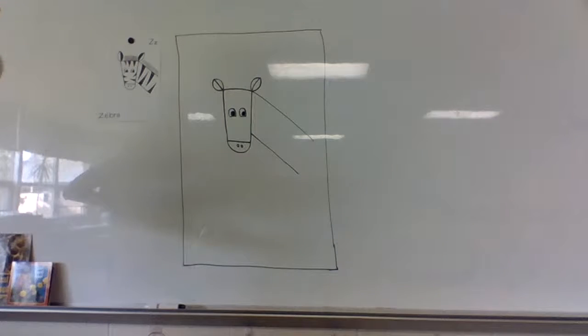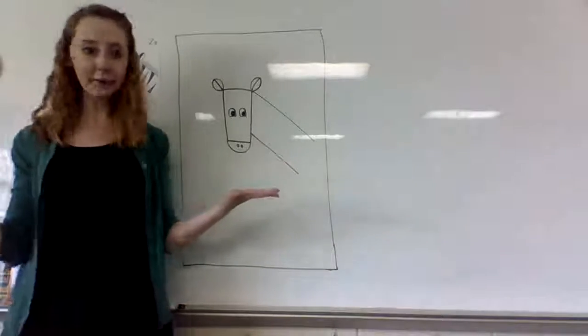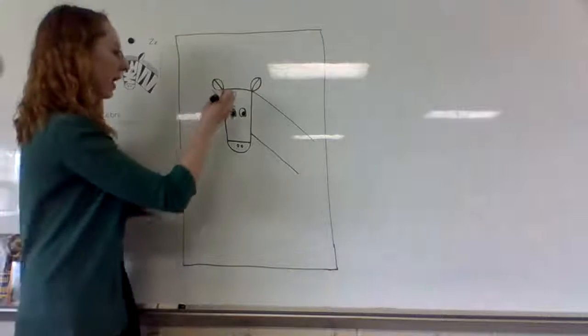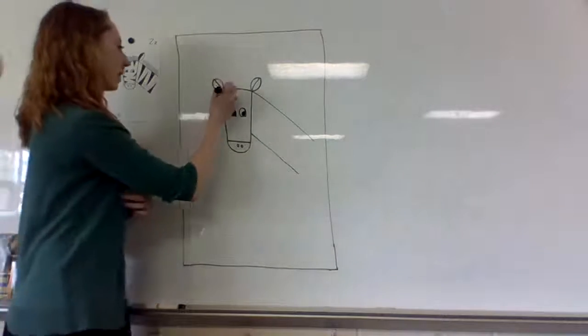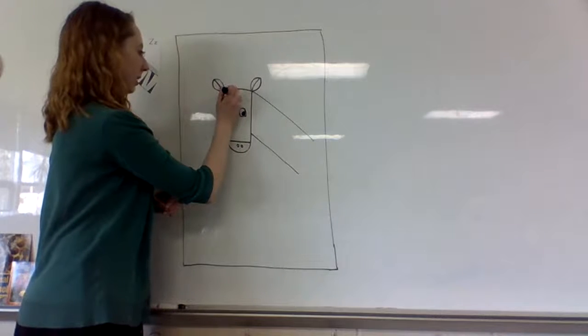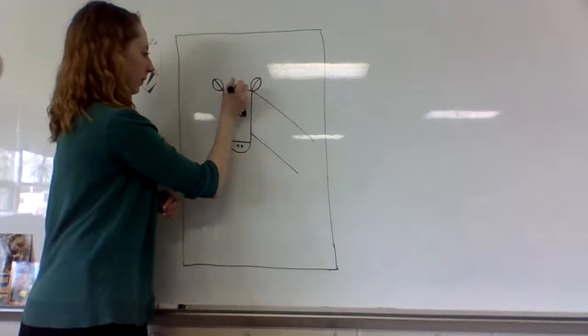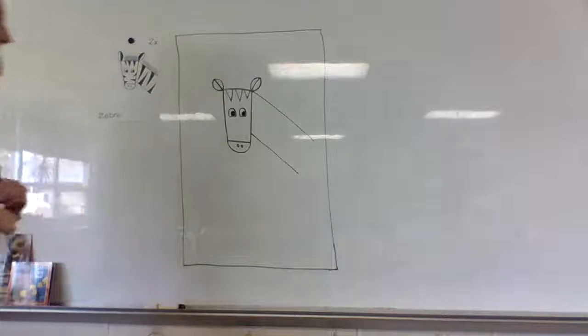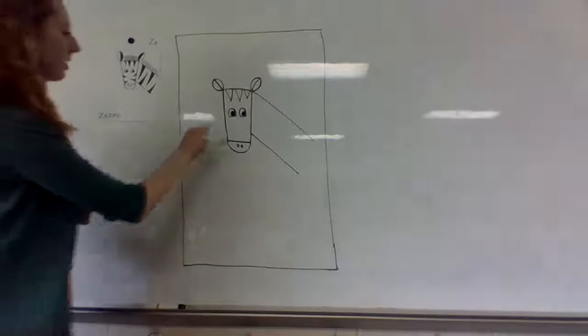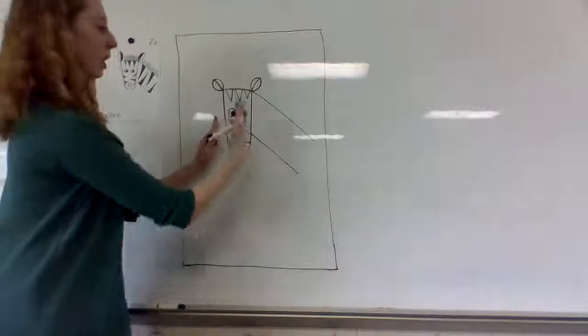Now we are going to add stripes, because all zebras have stripes. To add stripes, we're going to draw some triangle shapes. First, let's start up at the top of his head. We're going to draw three little triangles up there, not teeny tiny—one, two, three. They don't all have to be the exact same size. Then down by his nose, we're going to draw two on the left side and two on the right side: one, two, one, two.